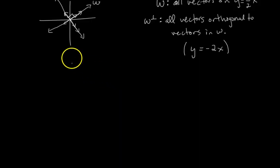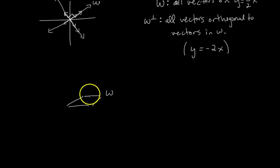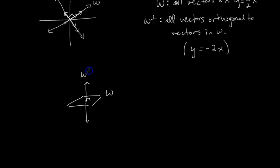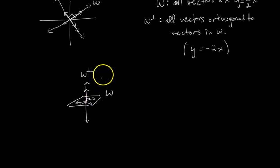Now let's geometrically interpret orthogonal complements in three dimensions. Say you have this plane — let's call it W. This is a two-dimensional subspace in a three-dimensional world. If I draw a line that pierces this plane at a right angle, that line is W perp. Any vector on that line piercing the plane at a right angle is orthogonal to every vector in W.